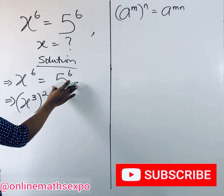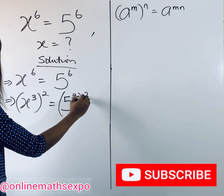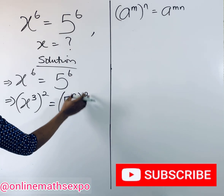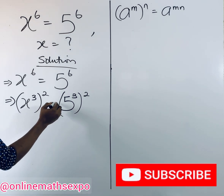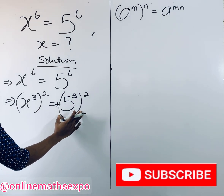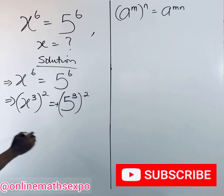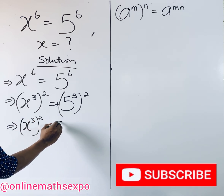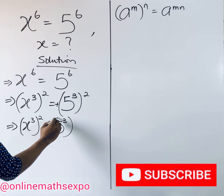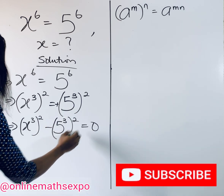This is equal, so we do the same on the right side. Now observe that the sign is equal, so we are going to remove the right side by subtracting. This gives us x to the power of 3, raised to the power of 2, minus 5 to the power of 3, raised to the power of 2, all equal to 0.